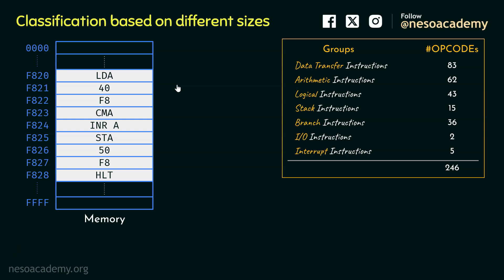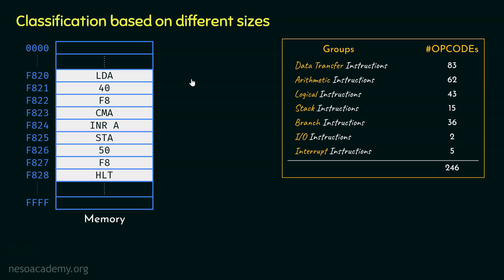The contemporary microprocessor manufacturer Motorola prefers the big-endian way — the higher-order byte is stored first, followed by the lower-order byte. Since we are learning about the 8085 microprocessor, the little-endian method is followed. The name is also justified: the little end, or lower-order byte, is stored first. So LDA F840 is stored as: LDA, then the lower-order byte 40, then the higher-order byte F8 — occupying three bytes of memory.